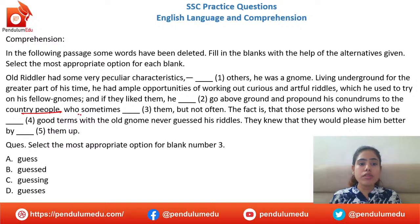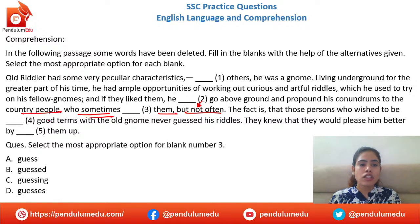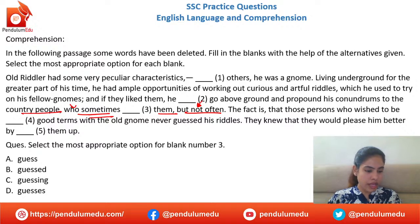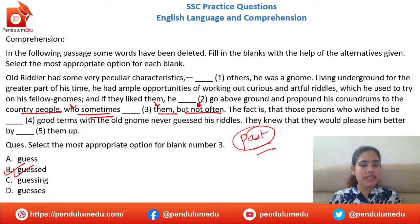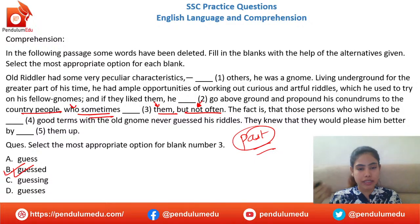Next: 'He would go to the country people who sometimes ___ them, but not often.' Options: guess it, guessed it, guessing, guesses. We are in past tense throughout the passage. Option B — 'guessed' — is correct. Sometimes they guessed them, but not often. Abhishek and Sanjeev — B is absolutely correct.